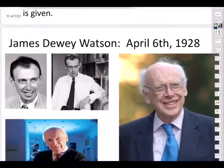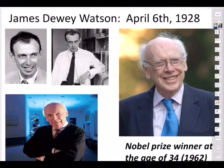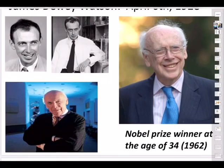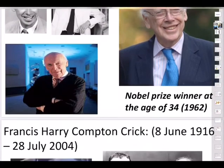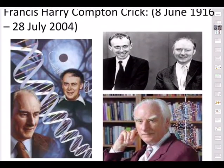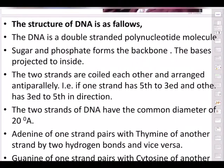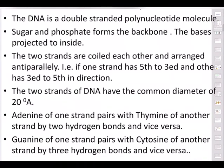Watson and Crick got the Nobel Prize for their work in 1962. According to their model, the DNA contains two polynucleotide strands coiled together in a helical manner — hence the name double helix structure. Professor Watson got the Nobel Prize at the age of 34, which is remarkable — normally at that age people are doing their PhD or PG.